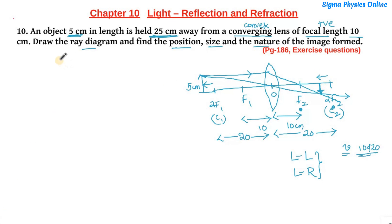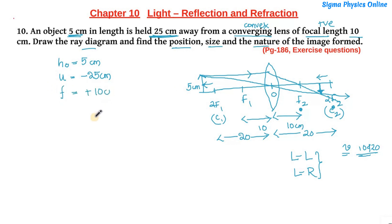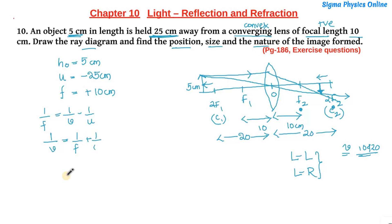Let's write down what is given. The height of the object is 5 centimeter. The object distance is minus 25 centimeter — negative because we measure it towards the left, against the direction of light. The focal length is plus 10 centimeter because a convex lens has a positive focal length. We will solve this using the lens formula: 1/f = 1/v minus 1/u, which we rewrite as 1/v = 1/f plus 1/u. Substituting: 1/v = 1/10 plus 1/(minus 25), which is 1/10 minus 1/25.